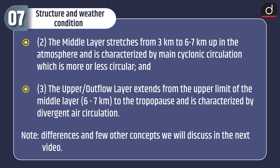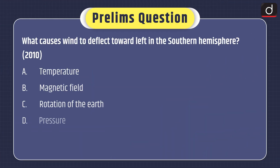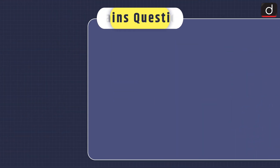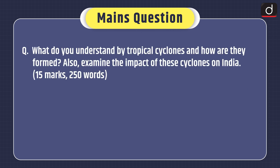We will discuss differences and a few other concepts in the next video. Now it's time for the question. This question was asked in the 2010 prelims exam: What causes wind to deflect toward the left in the southern hemisphere? Temperature, magnetic field, rotation of the earth, or pressure? You can send the answer in the comment section. The mains question is: What do you understand by tropical cyclones and how are they formed? Also examine the impact of these cyclones on India. That's all for today — stay tuned for the next episode. Thanks for watching.